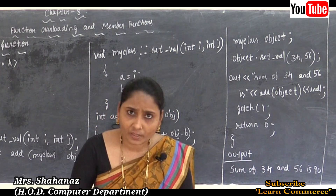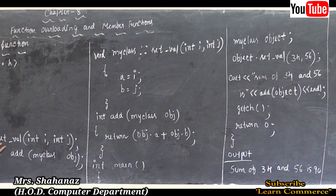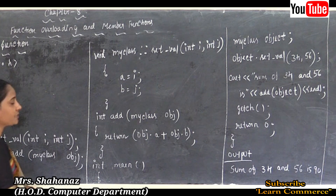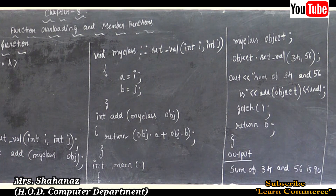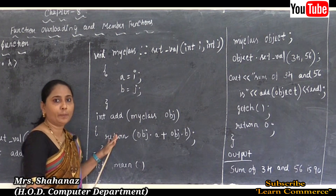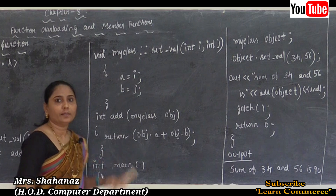The output is: sum of 34 and 56 is equal to 90, because we are adding the values. The 'add' function is the friend of the class myclass — 'set_val' is the member function of myclass, but 'add' is the friend function, a non-member function of the class, and can be declared anywhere using any access specifier without restriction.